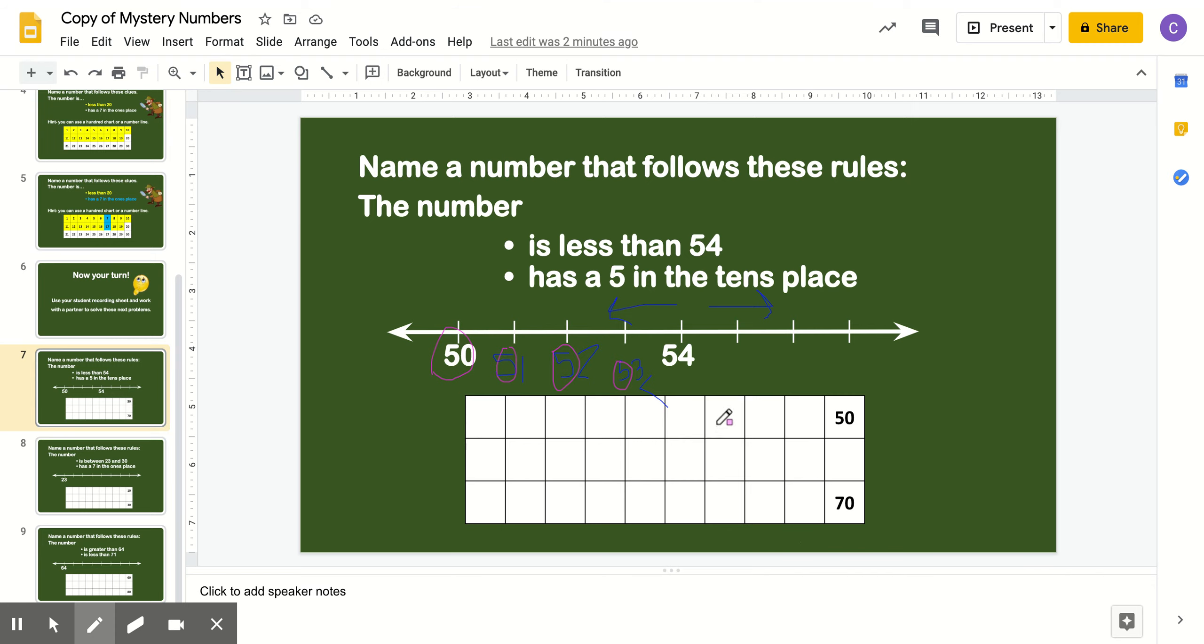All right. So I'm going to go backwards from 59, so 49, 48. I'm going to stop there, and then now I'm going to go 50, 51, 52, 53, and 54. I'm going to stop at 54 because it's less than 54. So we don't need to write 55, 56 because those are numbers greater than 54.